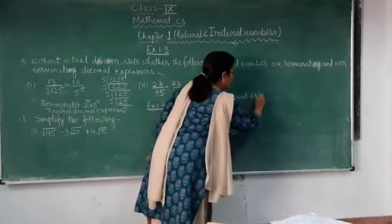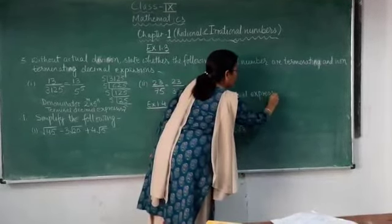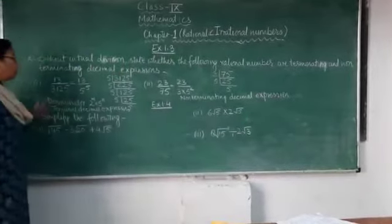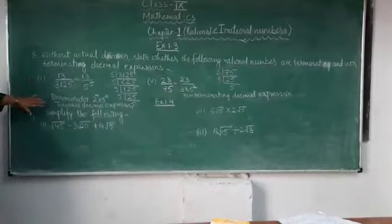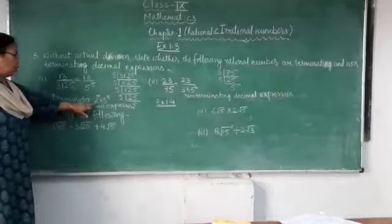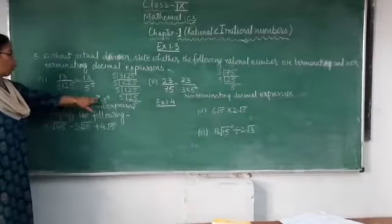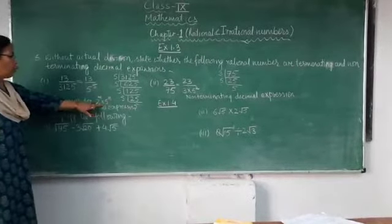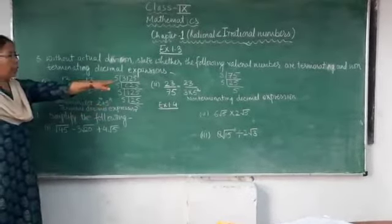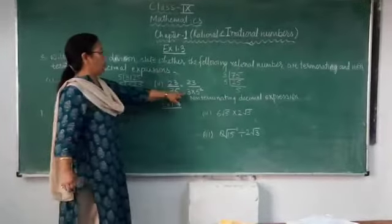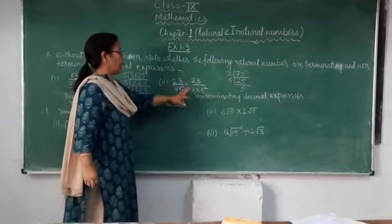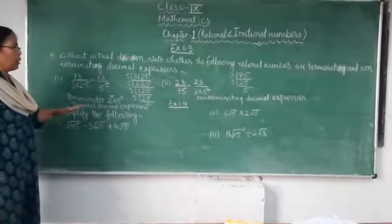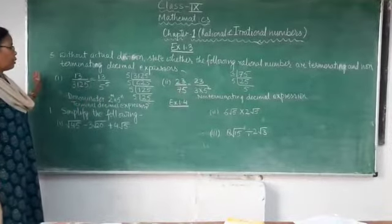The other parts of this question can be solved the same way. If you understand the rule — denominator must be of the form 2ⁿ × 5ⁿ — then any other factor like 3 in the denominator means the fraction is non-terminating.